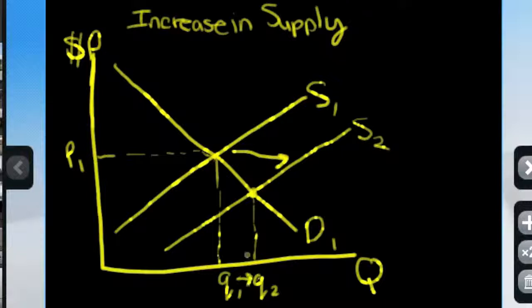So quantity increases, P2 and price decreases.